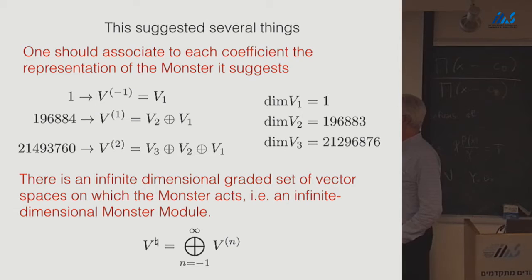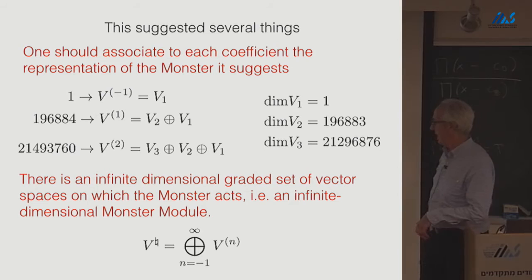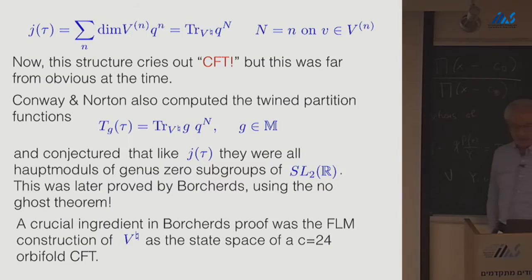But I think it was Thompson that suggested that one way of making sense of this would be to take each coefficient and identify it with the representation of the monster that it suggests. So, 196884 we would view as a direct sum of the first two irreducible representations, the next guy is the sum of the first three. And you would then have an infinite collection of vector spaces, one for each power of q to the n.